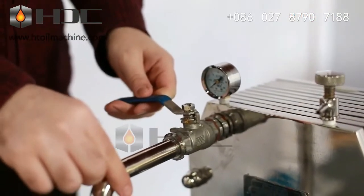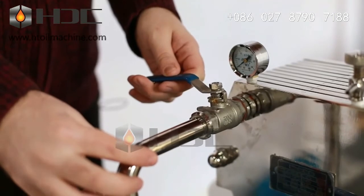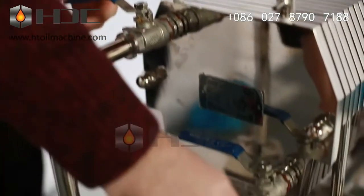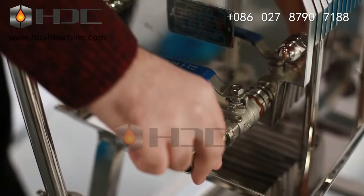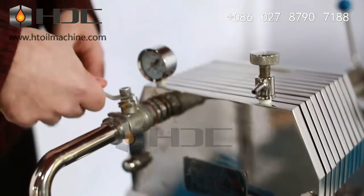So this valve here is our intake valve for our material and this one down here is the outtake valve for our material. So when using the machine, we want to open both valves.